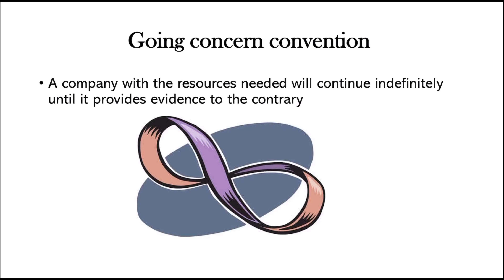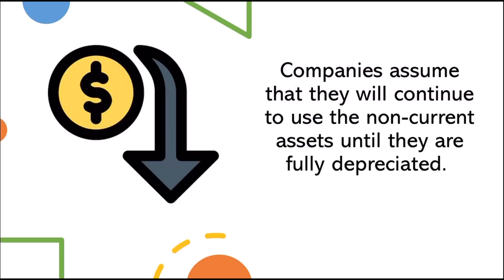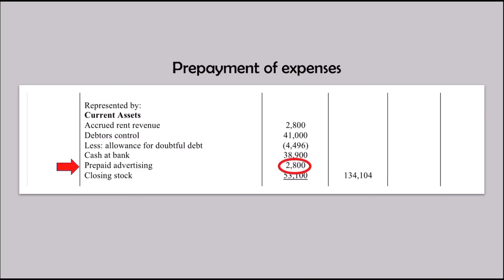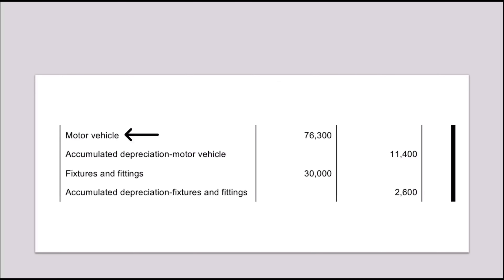The prepaid amount is recorded in the balance sheet as a current asset. Next is the going concern convention, which states that the company will continue indefinitely. This is seen in the computation of depreciation, as it assumes that the company will continue to use the non-current asset until it is fully depreciated. Pre-payments as well as accruals are done in the expectation that the business will continue operations in the future. Products are also recorded as assets as they are believed to be able to generate future economic benefits for the business.